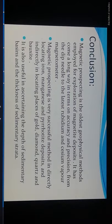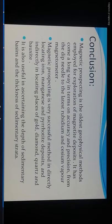Conclusion: Magnetic prospecting is the oldest geophysical method employed for the exploration of magnetic deposits. It has come a long way in terms of accuracy and precision, from the dip needle to the latest rubidium and cesium vapor magnetometers. Magnetic prospecting is a very successful method for directly locating iron, manganese, and pyrrhotite deposits, and indirectly locating placer gold, diamond, quartz, and bauxite. It is also useful for ascertaining the depth of sedimentary basins and the thickness of sedimentary strata.